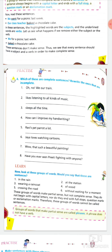Next: 'sleeps all the time.' Same thing — the verb has an 's,' so we cannot use a plural subject. The answer will be: he sleeps all the time, or she sleeps all the time, or any singular name like Ram sleeps all the time.